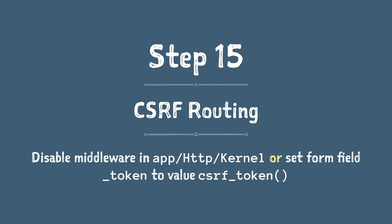Step 15: CSRF (cross-site request forgery) protection is on by default in Laravel 5, meaning every route that could modify data — POST, DELETE, etc. — is automatically protected. Any forms without a CSRF token will give an invalid token error. To fix this: either disable the CSRF middleware globally in `App\Http\Kernel`, which reverts to the old behavior, or add a hidden field `_token` set to the value of the `csrf_token()` function to all your forms. You can also move the middleware from global to route-specific middleware in the kernel to toggle it per route.